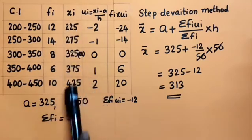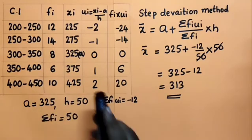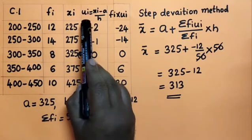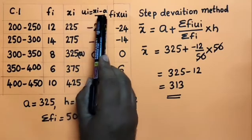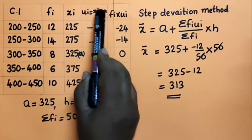So to find ui, you simply compute xi minus a divided by h — very simple. The class where xi equals a gives ui = 0. Classes below a give negative ui values (−1, −2, ...) and classes above give positive ui values (+1, +2, ...).